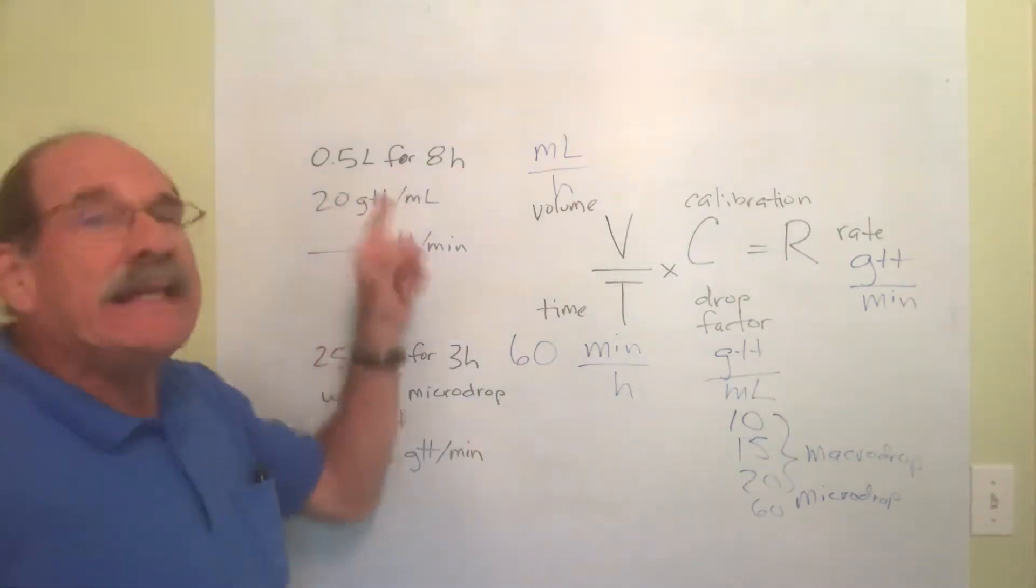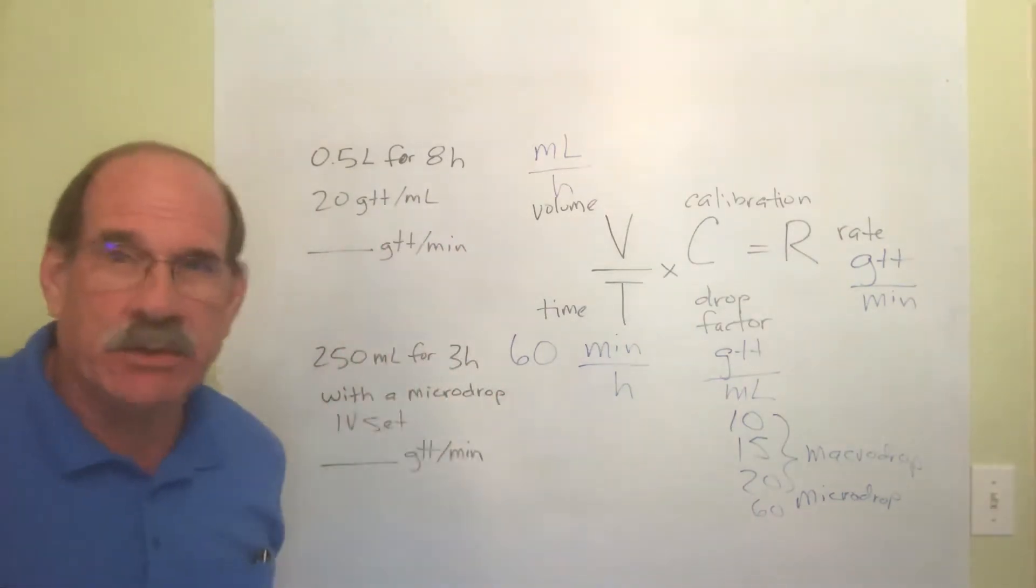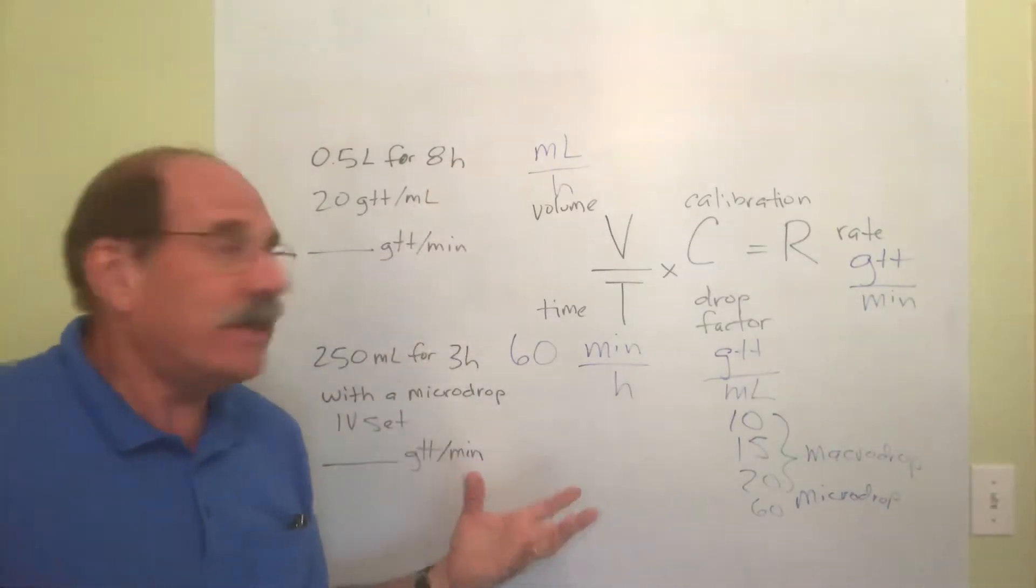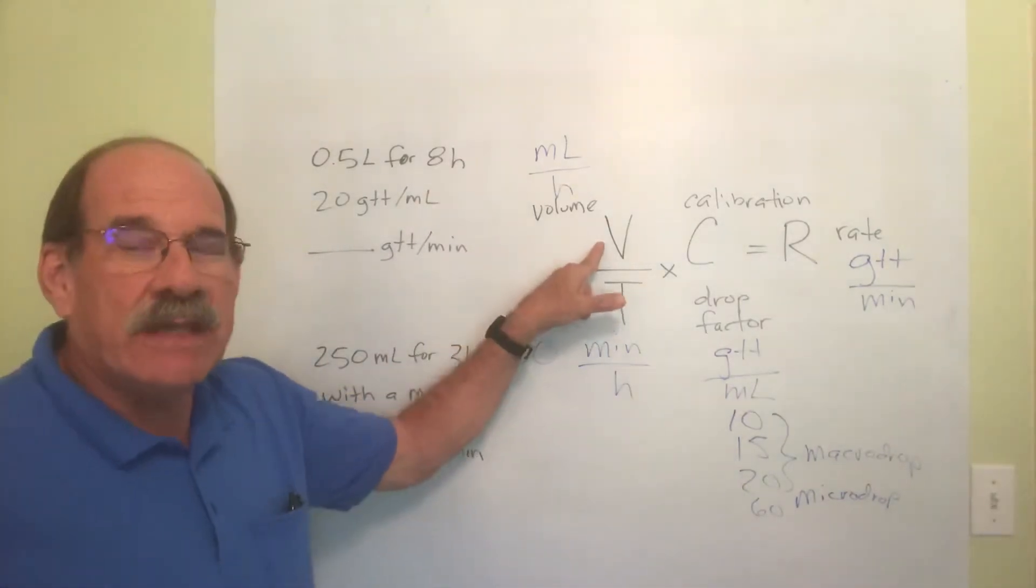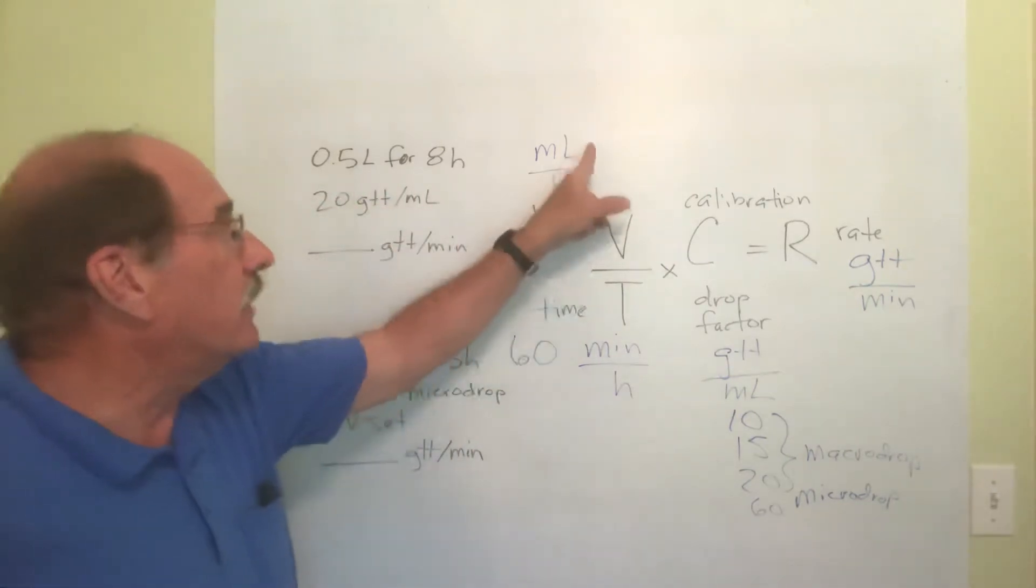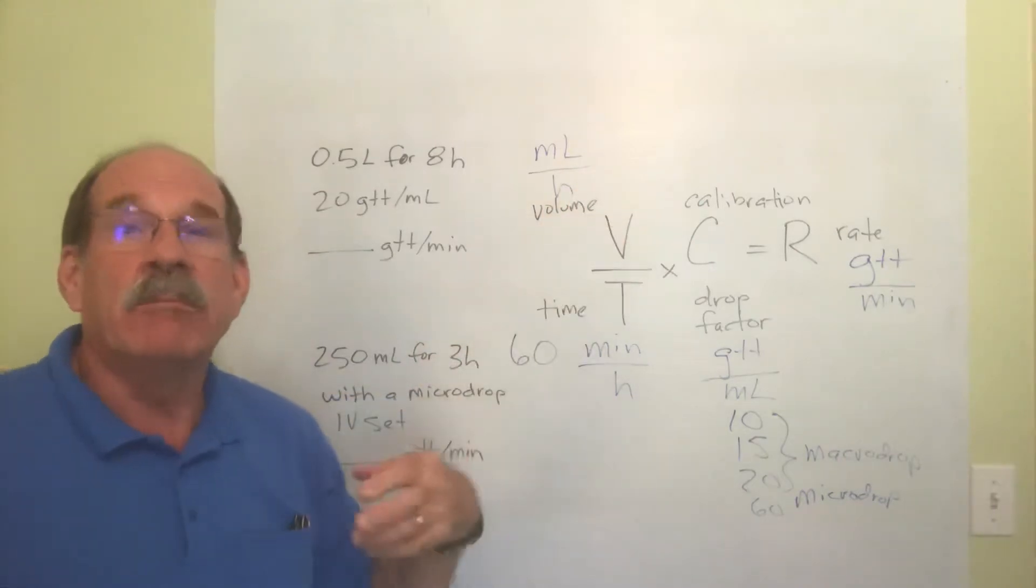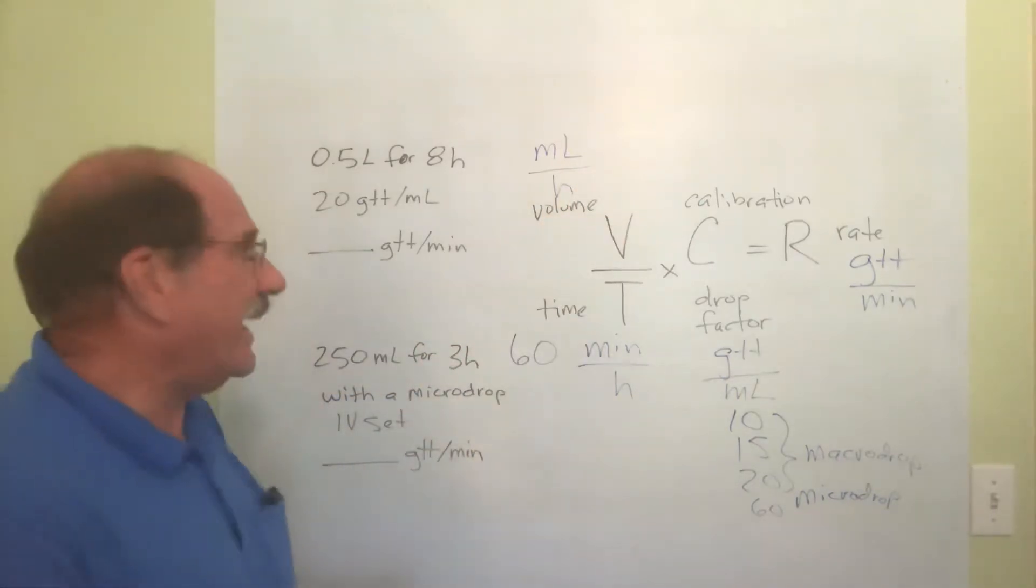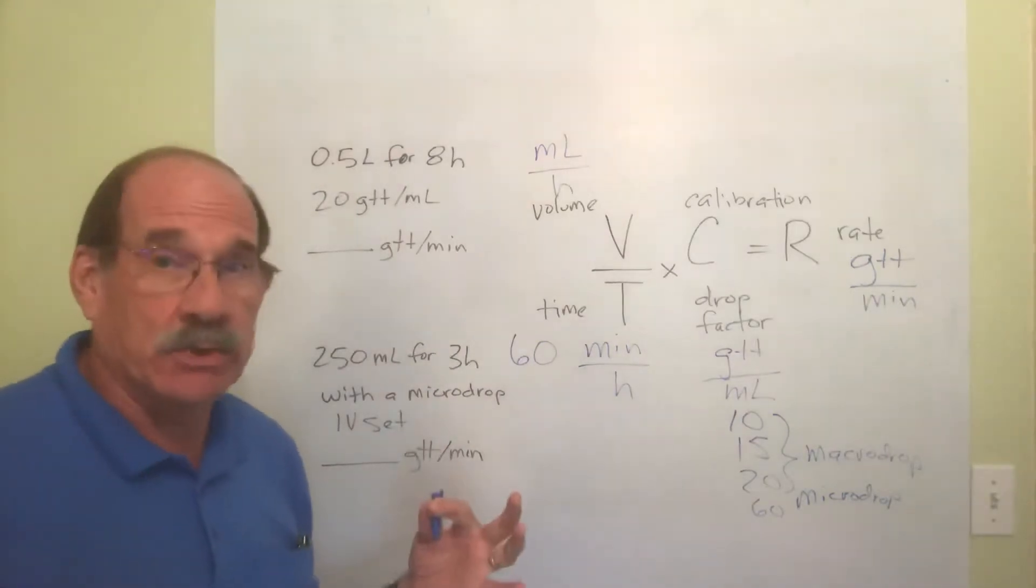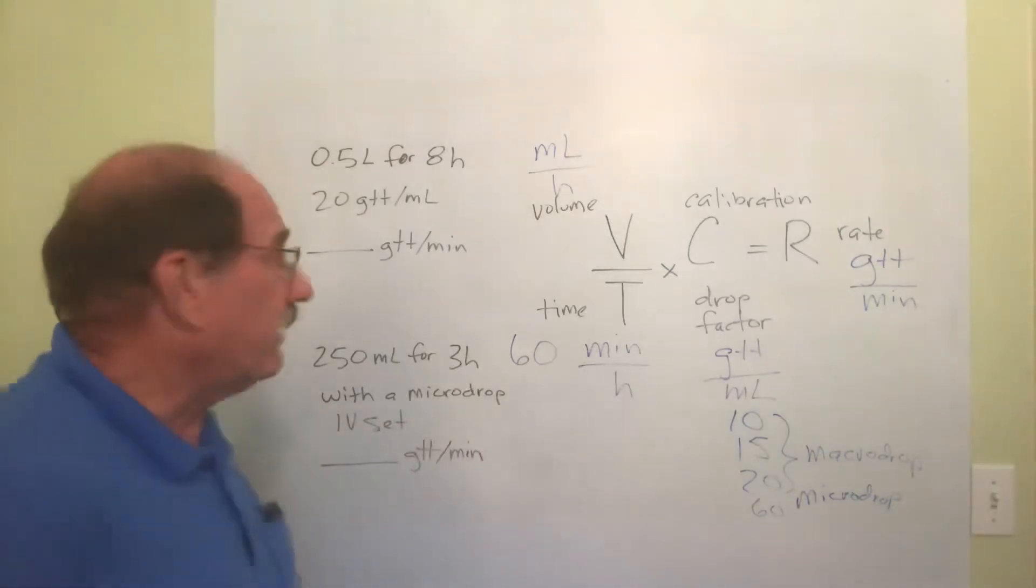You're supposed to have 0.5 liters of some IV fluid in your bag that you're going to give the patient. You're going to do it for eight hours. Well, the first thing I have to know is what is V? Again, V stands for volume, but not the total volume, but the milliliters per hour. I need to find out the milliliters per hour. Well, I got to take, hey that's liter. I got to take that and make it into milliliters. Well how many milliliters is that? That's 500.